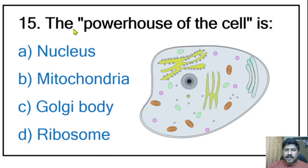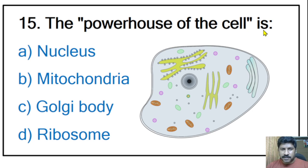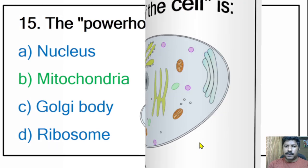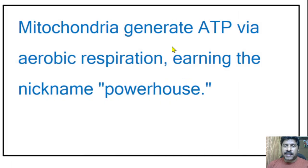Fifteenth question: the powerhouse of the cell. Options: nucleus, mitochondria, Golgi body, ribosome. The correct answer is mitochondria — don't forget this question, as it is a very common repeated question. Mitochondria generate ATP via aerobic respiration, earning the nickname 'powerhouse of the cell.'